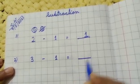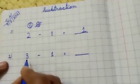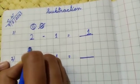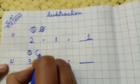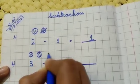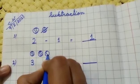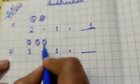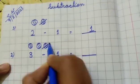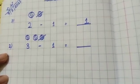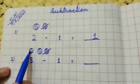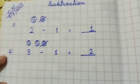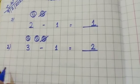Now number two. Number two is 3 minus 1 equal to dash. Okay, here I am drawing again three balls, one, two, and three. Now I will remove one, so I cut this one ball.